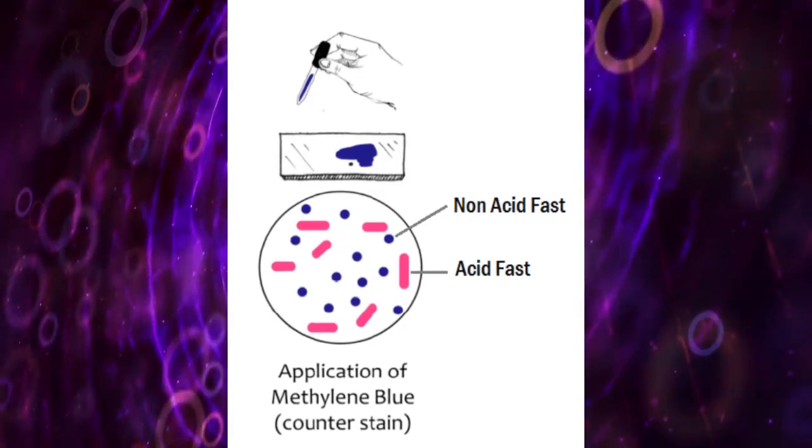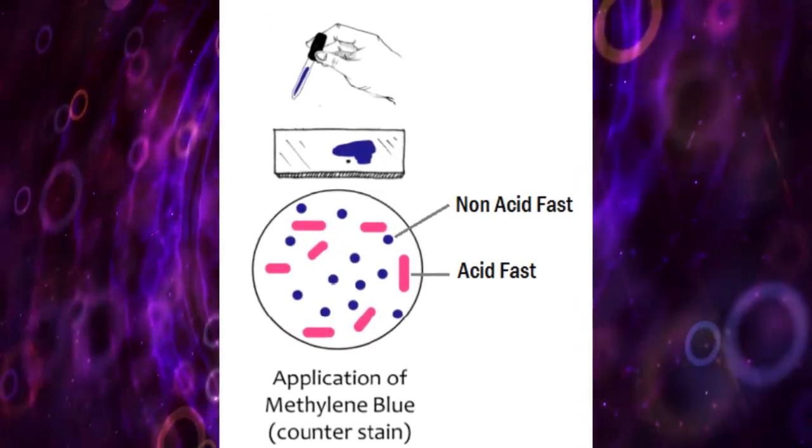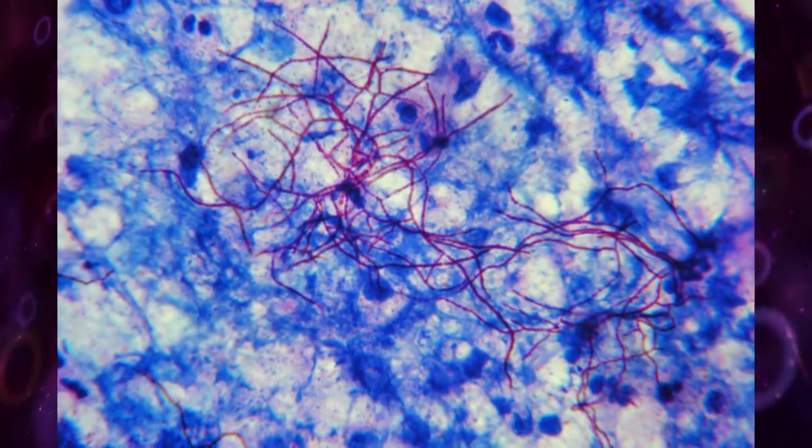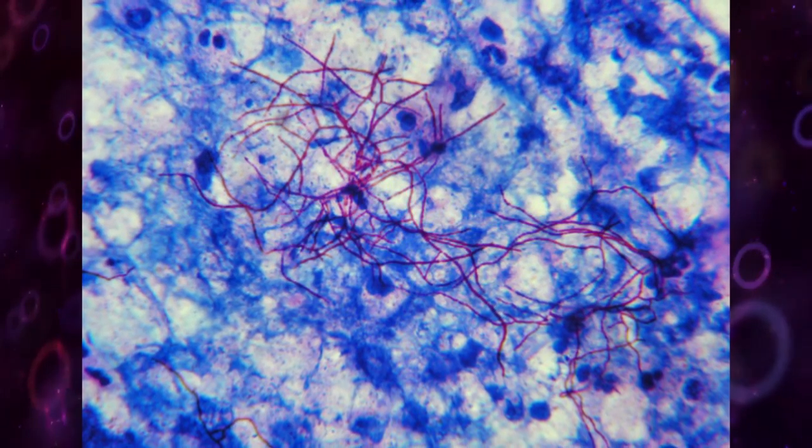Finally, apply methylene blue, which stains the background material, providing a contrast color against which the red acid-fast bacilli can be seen.